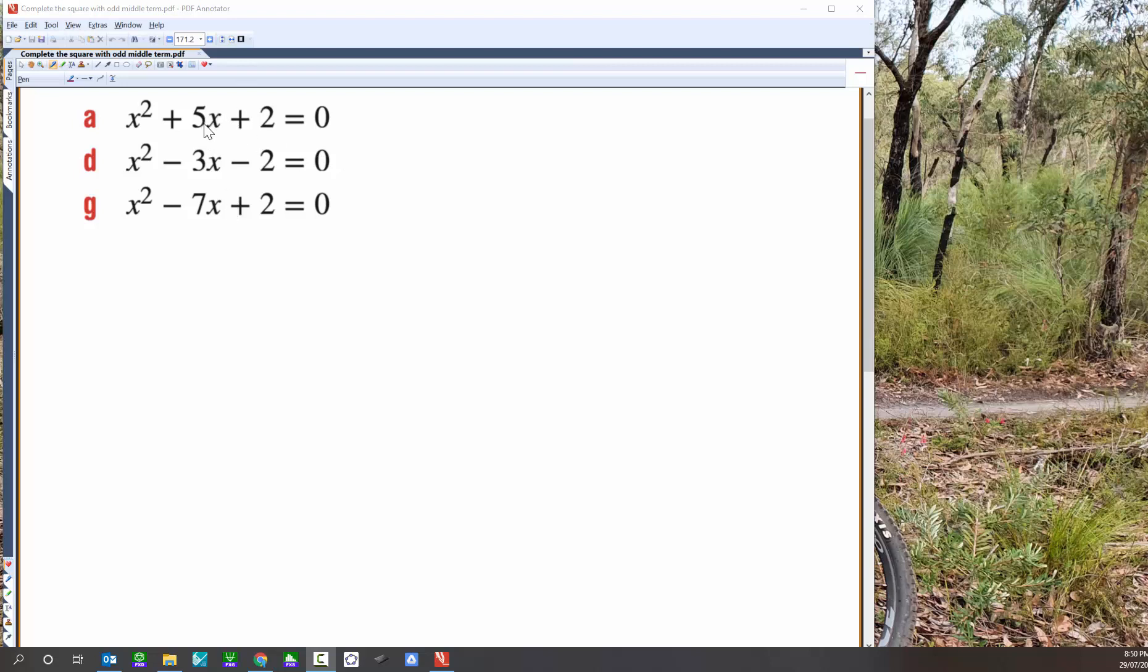Okay, in this video we'll work through three different trinomials, and what we're going to use is the complete the square process, noting that the middle term is odd, and when the middle term's odd, it makes life a little more difficult for us to do the process. So let's look at this first trinomial here.